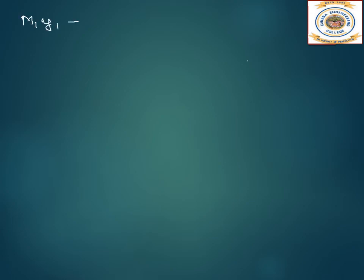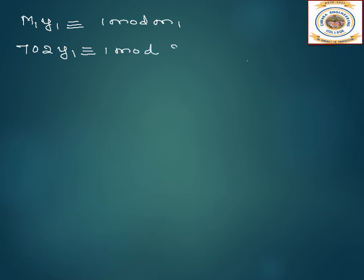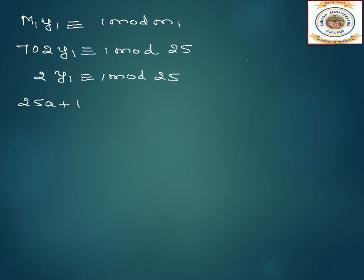Now let us calculate y1. M1·y1 ≡ 1 mod m1. Capital M1 is 702, and y1 ≡ 1 mod 25. Since 702 is greater than 25, we do 702 mod 25, and we get 2. So 2·y1 ≡ 1 mod 25. Writing this as (25a + 1) / 2, for a equal to 1 we get 13. Therefore y1 equals 13.